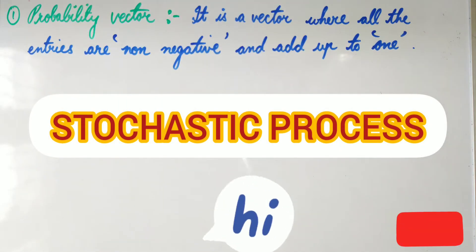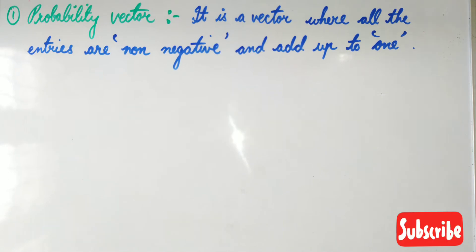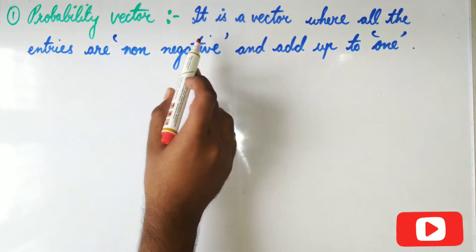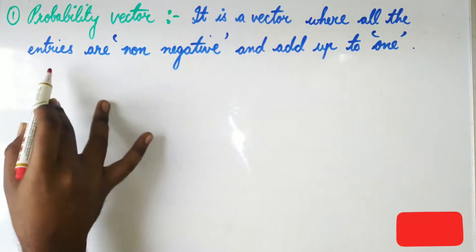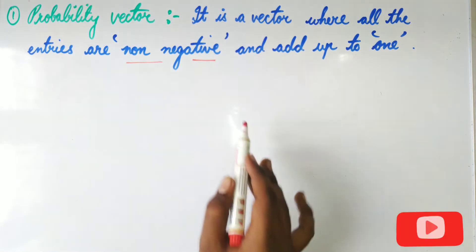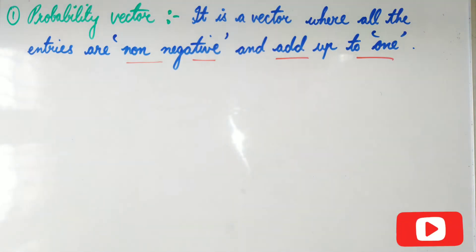In this video we are going to look into some definitions that are very important regarding the stochastic process. First we'll take up the probability vector. The probability vector is a vector where all the entries are non-negative, which means they are positive, and add up to exactly one.